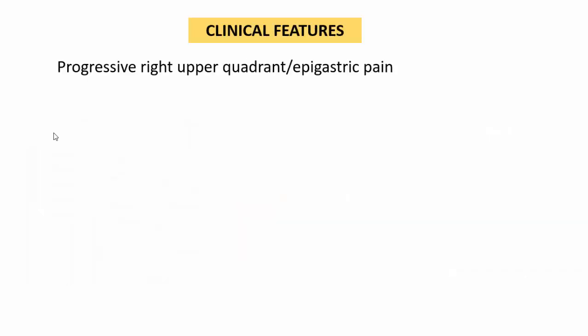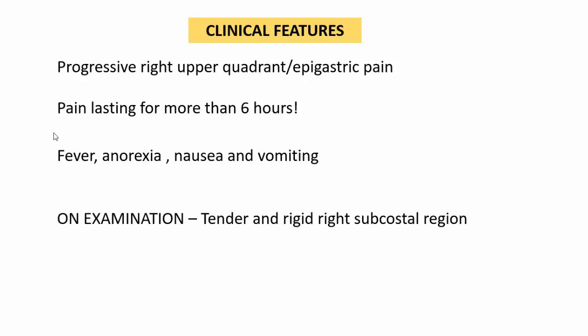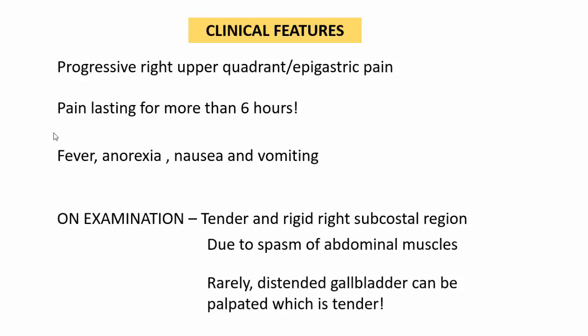Clinically, a patient with acute cholecystitis presents with progressive right upper quadrant or epigastric pain lasting more than six hours. This distinguishes it from biliary colic in cholelithiasis, which lasts 15 minutes to three hours. Pain lasting more than six hours accompanied by fever suggests a complicated gallstone or acute cholecystitis. Fever, anorexia, nausea, and vomiting are accompanying features. On examination, tenderness and rigidity in the right subcostal region may be elicited, and rarely the distended, tender gallbladder can be palpated.